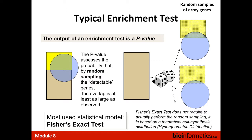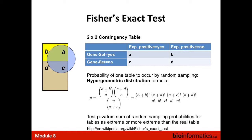What does the p-value really do? One of the more common p-values computed is Fisher's exact p-value or a hypergeometric test p-value. The p-value assesses the probability that by random sampling of genes from the detectable set, you'll get an overlap with a particular pathway that is as large as the overlap you observed. To compute the Fisher's exact test, you build a contingency table: whether any gene is present in a gene set yes or no, and whether any gene is present in your significantly mutated list yes or no. You estimate the probability of seeing that by chance using the hypergeometric distribution.